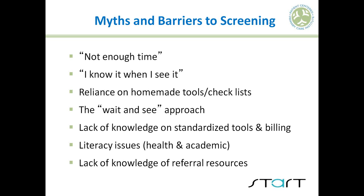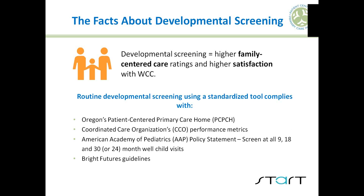Developmental screening is very important in the overall care of our families. It results in higher family satisfaction that their concerns have been addressed and their child's development has been assessed. It is part of Oregon's patient-centered primary care home and metrics, and one of the coordinated care organizations' performance metrics. It is the American Academy of Pediatrics policy statement that screening should occur at nine months, 18 months, and 30 or alternate 24 month well child visits for all children coming in for routine care, and it is part of the Bright Futures guidelines. We really have a coalescing of multiple sources agreeing that standardized developmental screening should occur in early childhood.